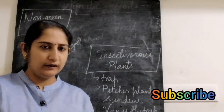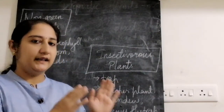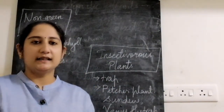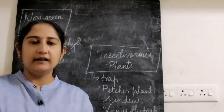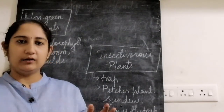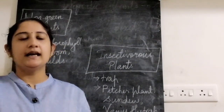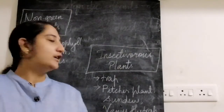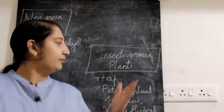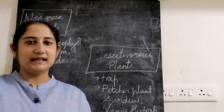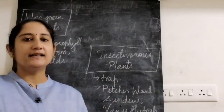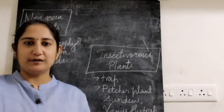Why do these plants trap insects? Is it for food? These plants are green and they can prepare their own food by photosynthesis, but they trap insects to get minerals and nutrients which are not available through the soil. Plants need not only food but also minerals and nutrients for their growth. When these plants do not get the proper nutrients and minerals from the soil, they trap the insect, dissolve it using chemicals present in the plant, and use it as nutrients.